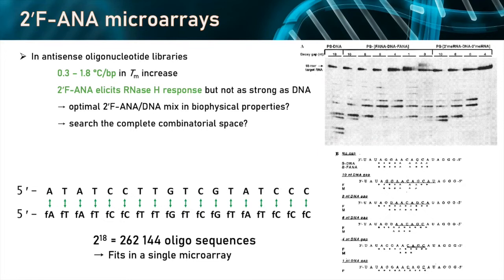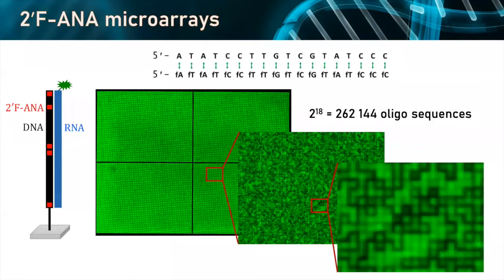We thought: can we do the entire permutation landscape of DNA into FANA? If you start with an 18-mer oligonucleotide you have 2 to the power of 18 different sequences, which ends up being 262,000 different oligos. Again, we can synthesize them all on the same microarray in a single synthesis, and that synthesis does not take much more time than a traditional single oligonucleotide solid-phase synthesis.